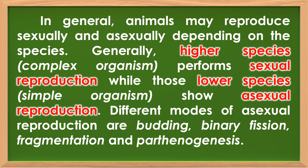In general, animals may reproduce sexually and asexually depending on the species. Generally, higher species or complex organisms perform sexual reproduction, while lower species or simple organisms show asexual reproduction.